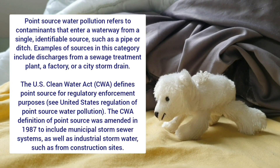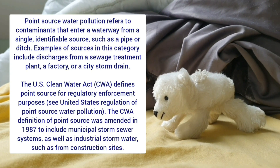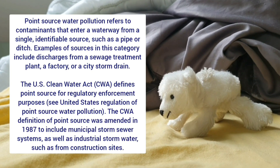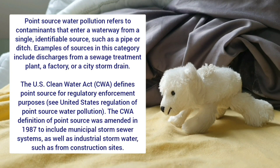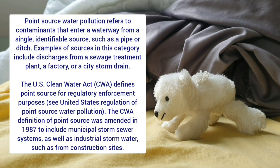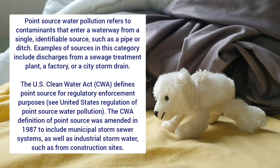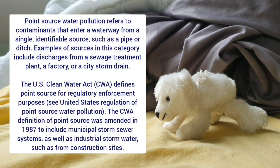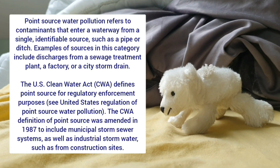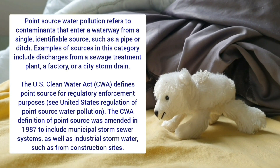Point source water pollution refers to contaminants that enter a waterway from a single, identifiable source, such as a pipe or ditch. Examples include discharges from a sewage treatment plant, a factory, or a city storm drain. The U.S. Clean Water Act (CWA) defines point source for regulatory enforcement purposes. The CWA definition of point source was amended in 1987 to include municipal storm sewer systems as well as industrial storm water, such as from construction sites.